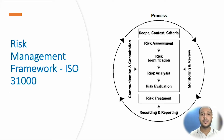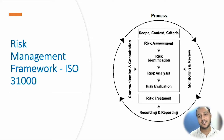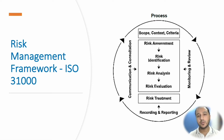Then comes risk assessment, which is the process where you assess the risk. It is broken down into three steps: risk identification, risk analysis, and risk evaluation. Risk identification is the first step. Risk analysis is when you assess the likelihood and impact of the risk. Risk evaluation is when you prioritize those risks — whether they are high risk, medium risk, or low risk.